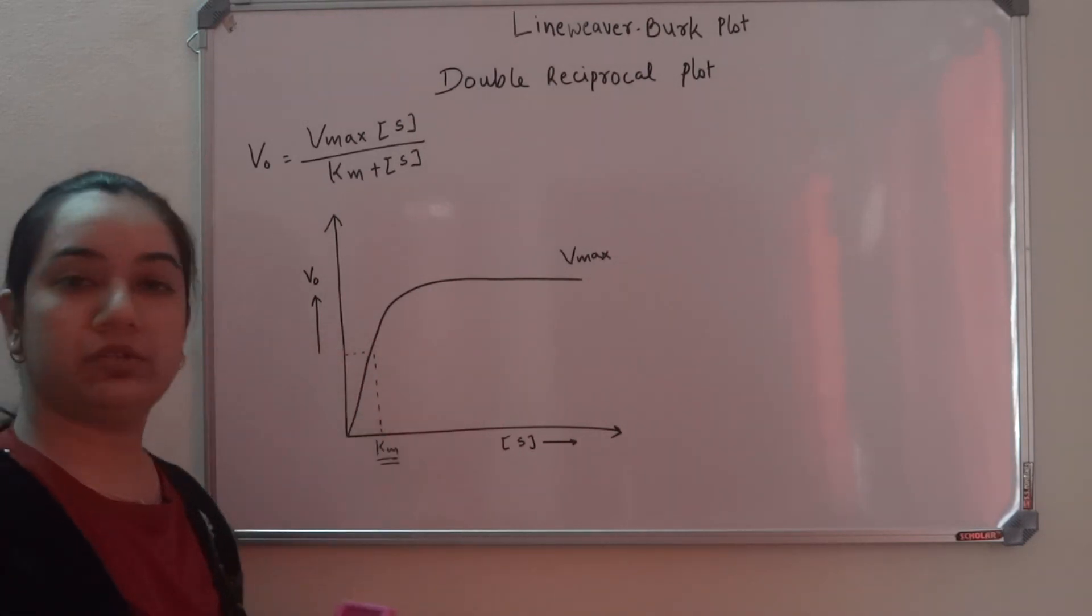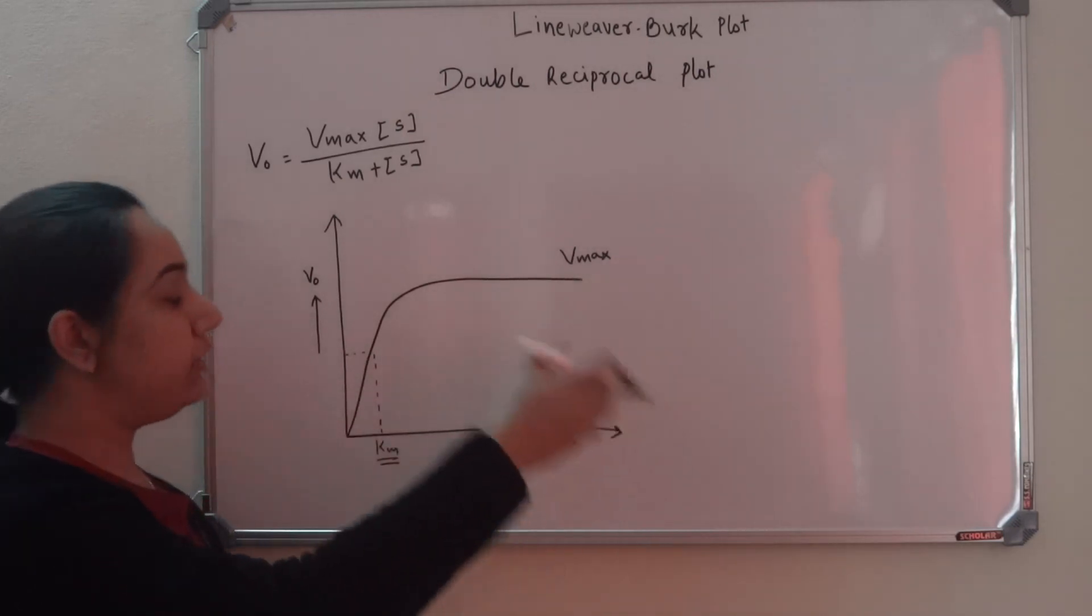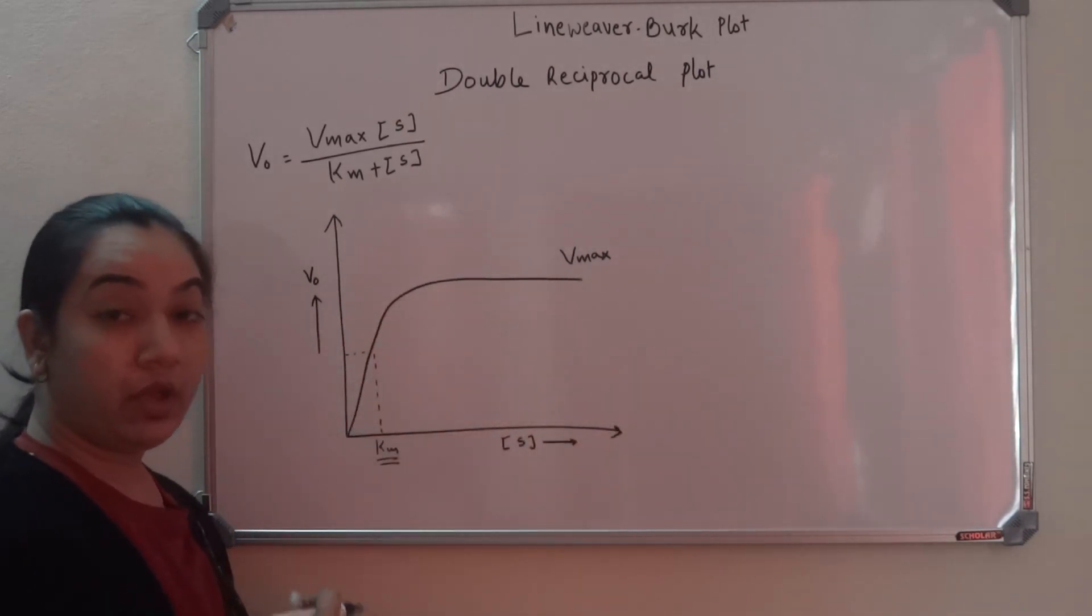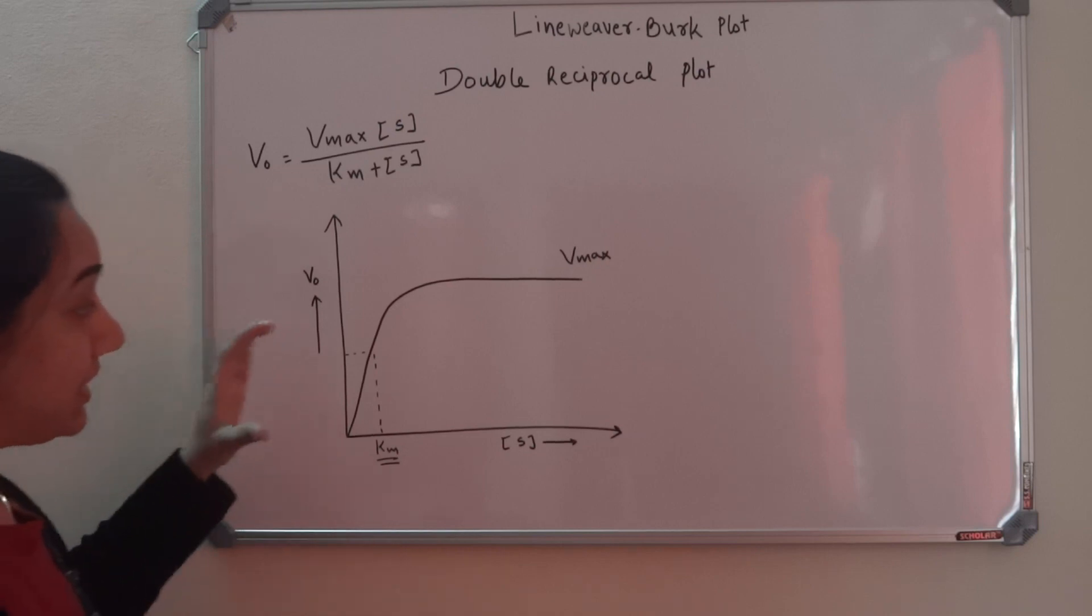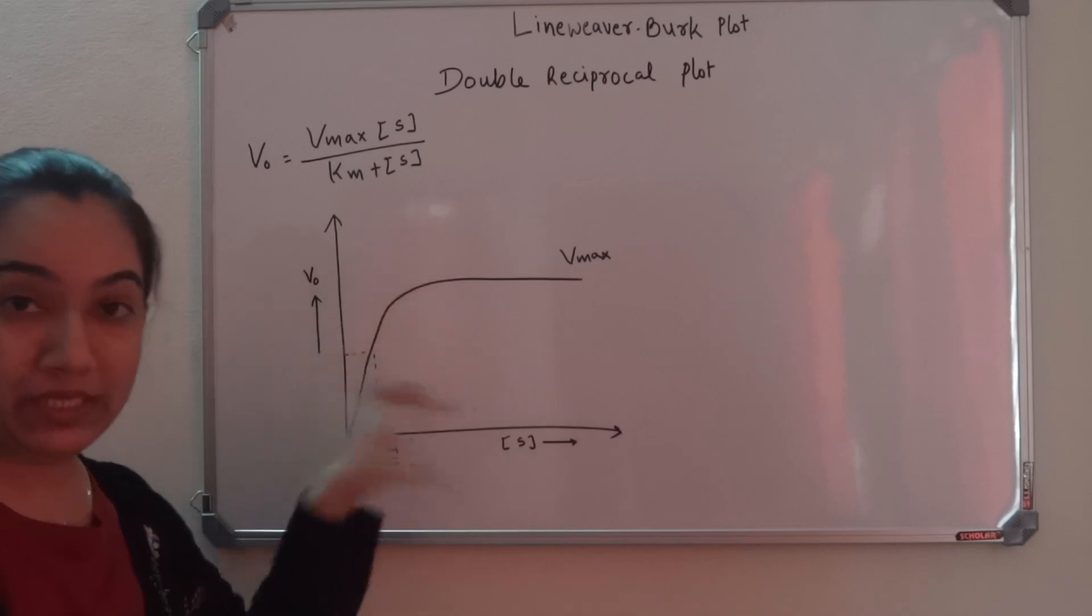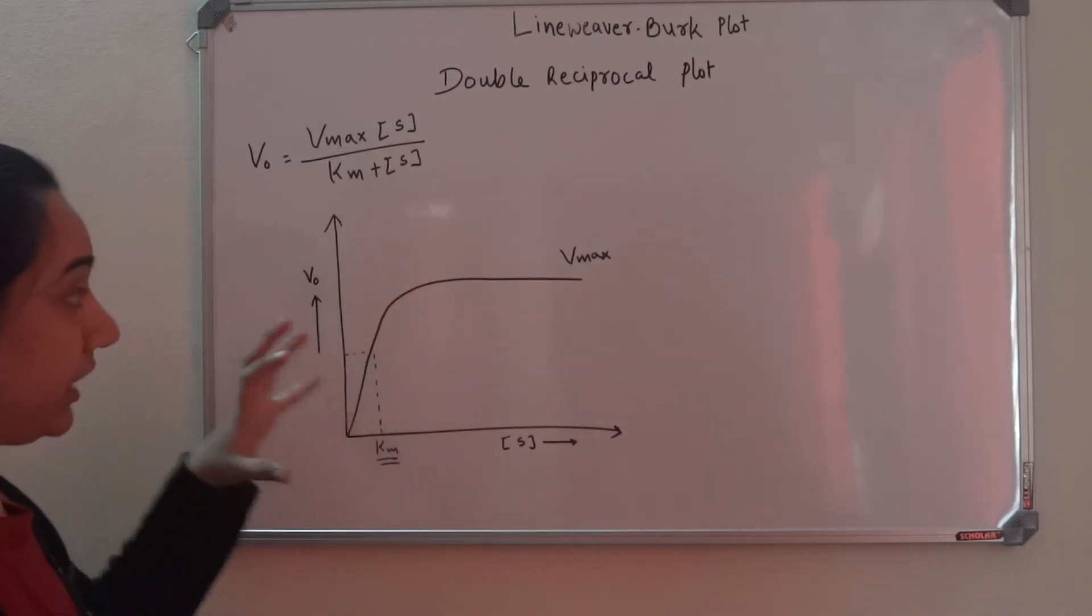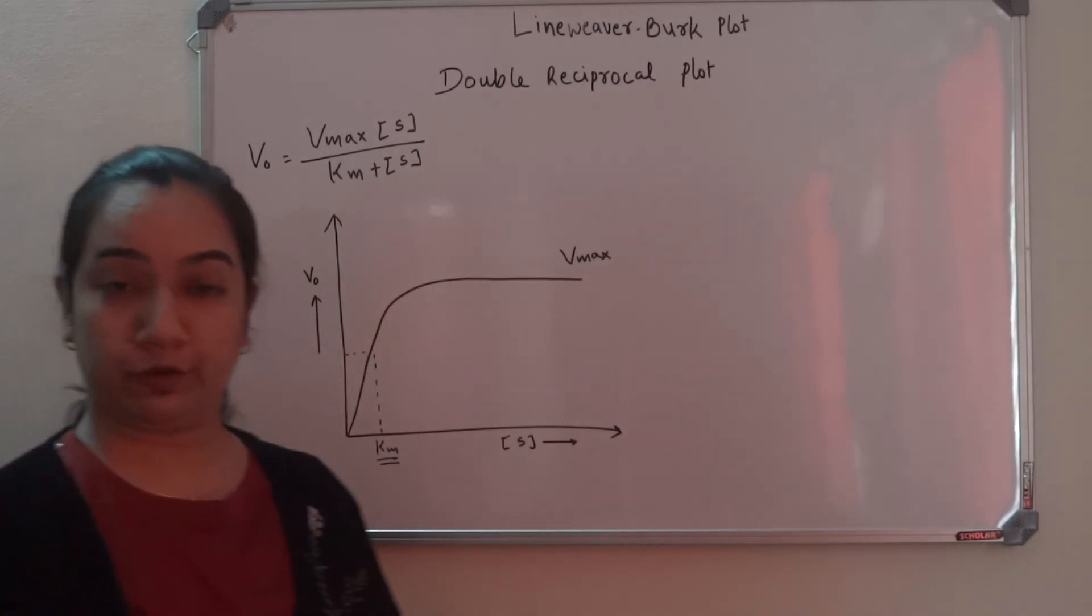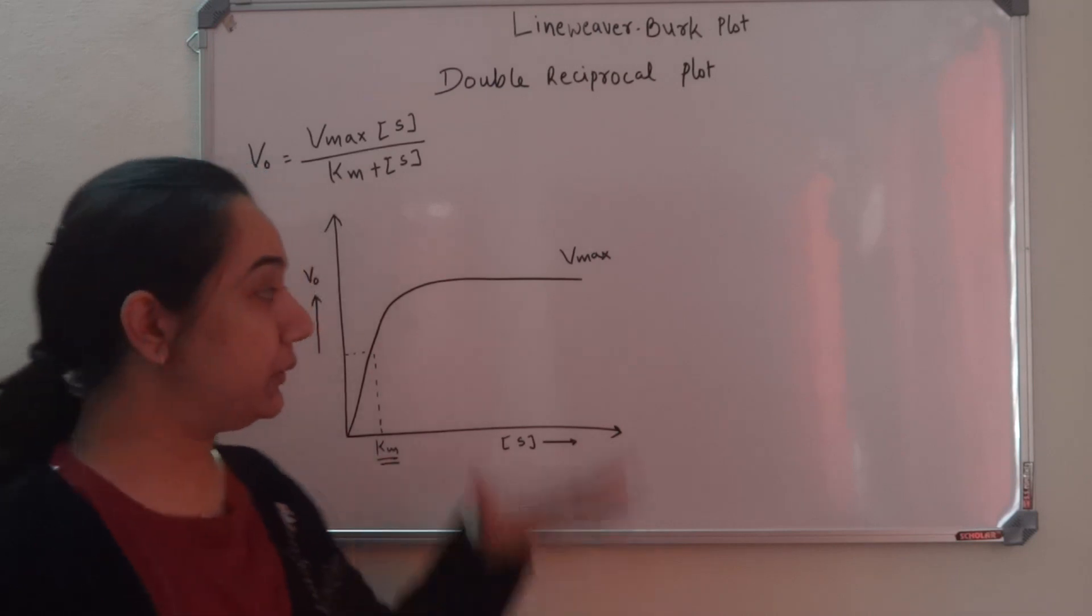This plot is used when we study kinetics of enzymes. We want to find out Vmax and the Km value. But look at this - this is a hyperbolic curve, a hyperbola. Using such a plot, it becomes very difficult to calculate or find out your values.